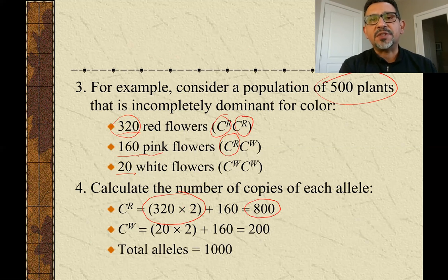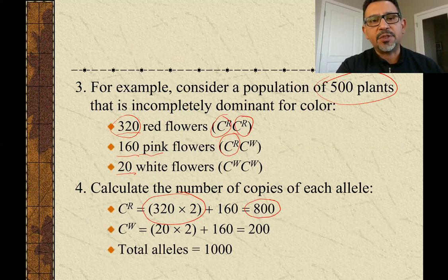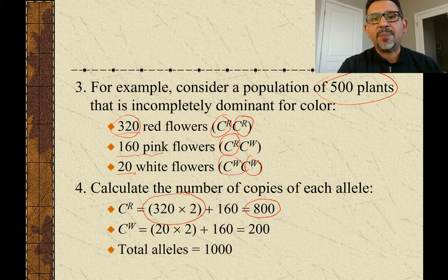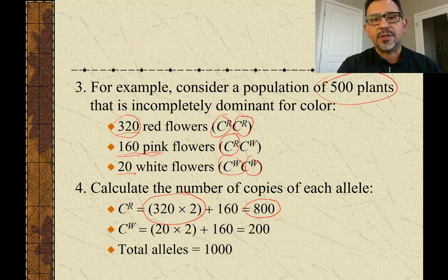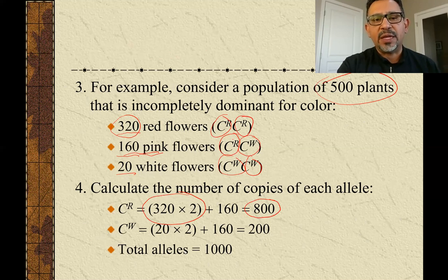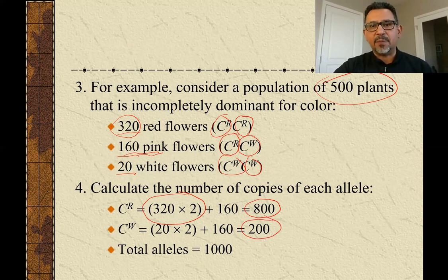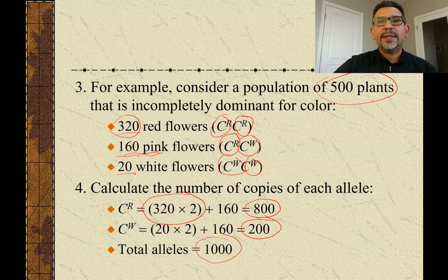We can use the same logic for calculating the white alleles. We only have 20 plants producing white flowers, each carrying two white alleles, so we multiply 20 times 2 to get 40. But remember, the heterozygotes — the pink flower plants — also each carry one white allele. So 20 times 2 is 40, plus 160 gives us a total of 200 white alleles in the population. Adding 800 plus 200 gives a grand total of 1,000 alleles responsible for flower color. This confirms our earlier shortcut: 500 plants times 2 equals 1,000 alleles total.